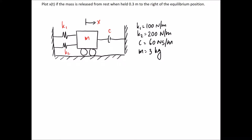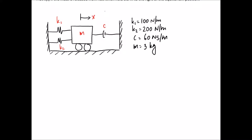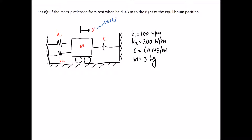For this example we're asked to plot x as a function of time if the mass is released from rest when held 0.3 millimeters to the right of the equilibrium position. Our diagram shows a mass connected to two springs and a damper, and x is measured from equilibrium. We're looking for x as a function of time, so we can follow the five steps from the previous video. The first step is to draw a free body diagram of our block.